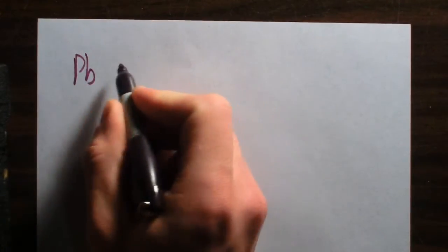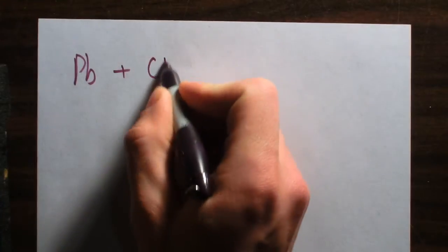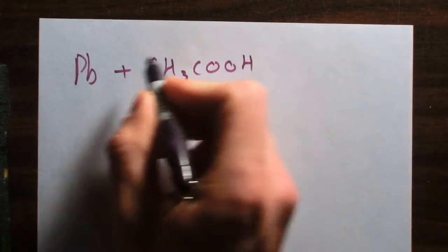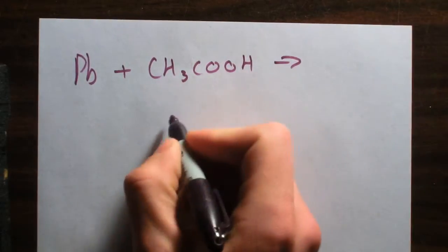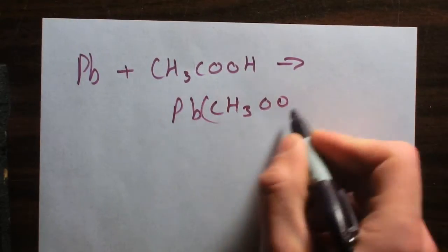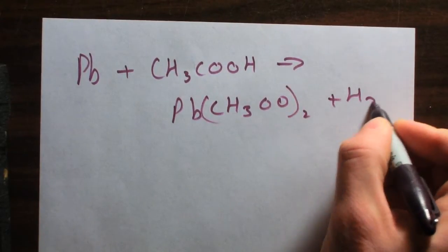We're going to start off with making lead acetate from elemental lead. So we'll take lead and introduce it into a solution of acetic acid which will yield lead acetate and hydrogen gas.